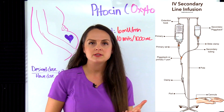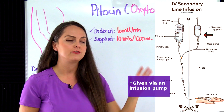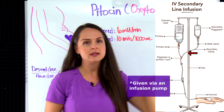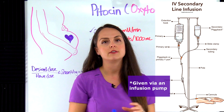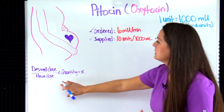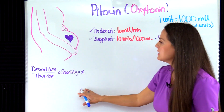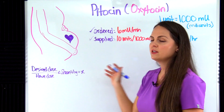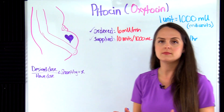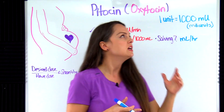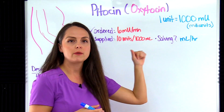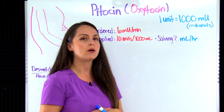Also, you want to remember that Pitocin is piggybacked in fluids — it's piggybacked into a primary line of fluids. We're going to be using the desired over halve formula to help us solve this. But if you don't like this formula, there are different methods available, including dimensional analysis or ratio and proportion, that will also show you how to solve these problems.